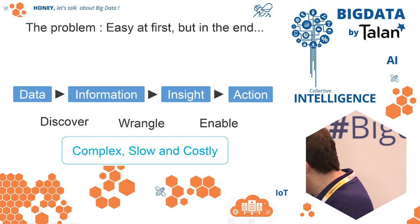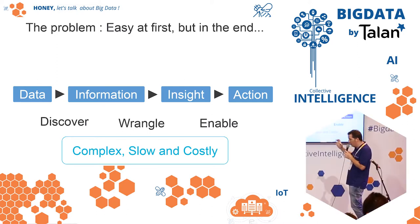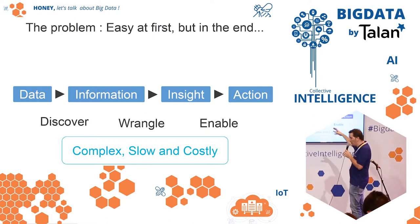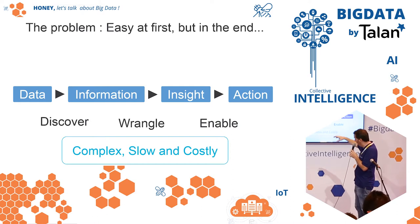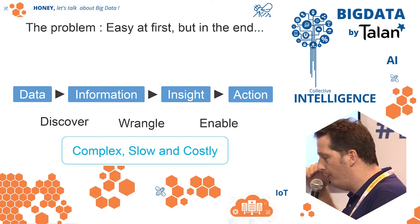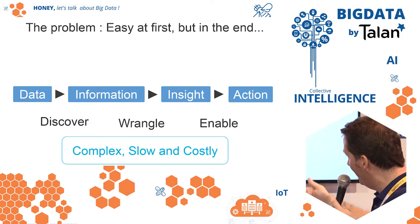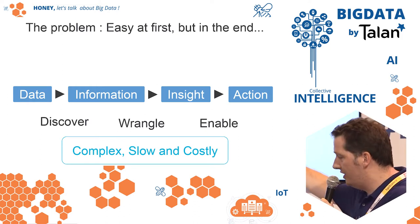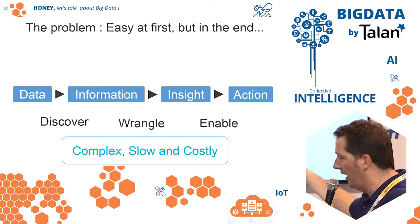What you need to do in general: you need to discover the data — quality, structure — you need to clean it, regulate it, prepare the data, do prediction, predictive analytics, to take action. So it's complex, slow, and costly.